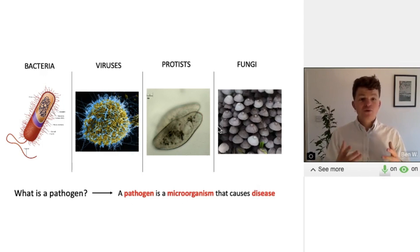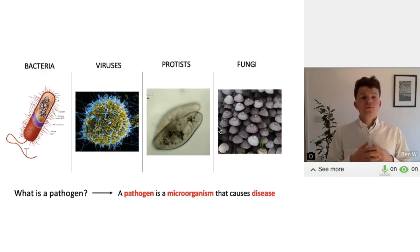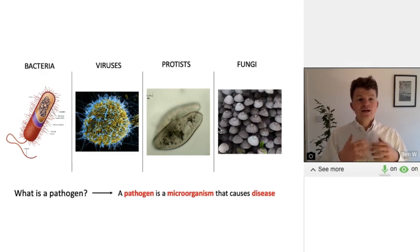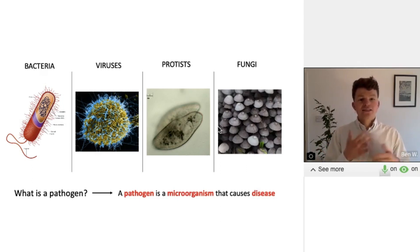These microorganisms will go into an animal or a plant — into a host — when they infect them, and they will replicate themselves within that host. So they'll make copies of themselves, and those copies will go on to infect other plants and other animals, and that cycle continues.